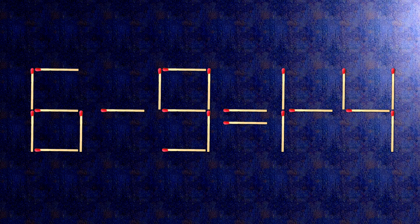Now, when we check the condition: 6 minus 9 is minus 3, and 1 minus 4 is minus 3. The task is done and the puzzle is solved.